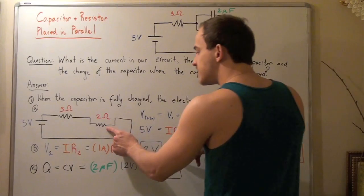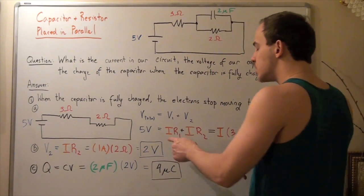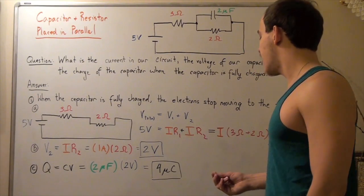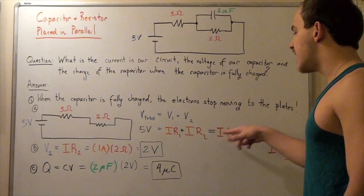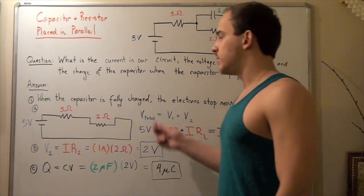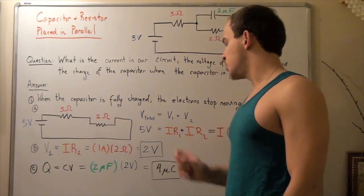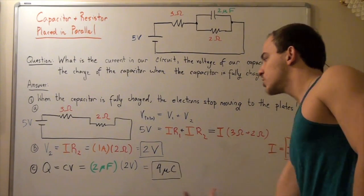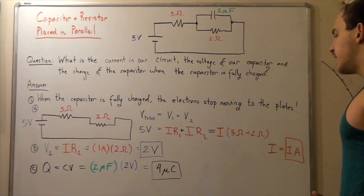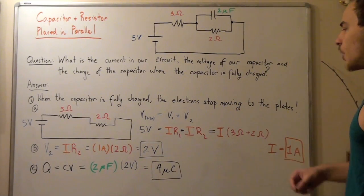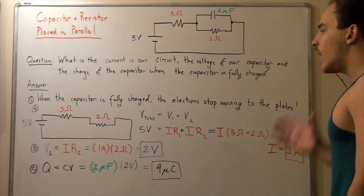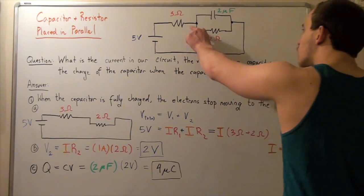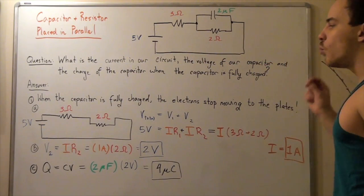Remember, the current through each resistor is exactly the same. So we factor out I and get I times (R1 plus R2). Since R1 plus R2 is 3 ohms plus 2 ohms, that gives us 5 ohms. So we get 5 volts divided by 5 ohms, and we get our current to be 1 ampere. In other words, our current when our capacitor is fully charged, across this resistor and this resistor, is 1 ampere.